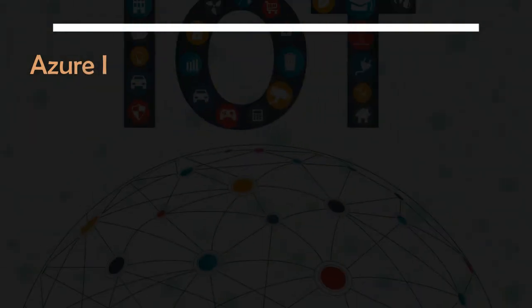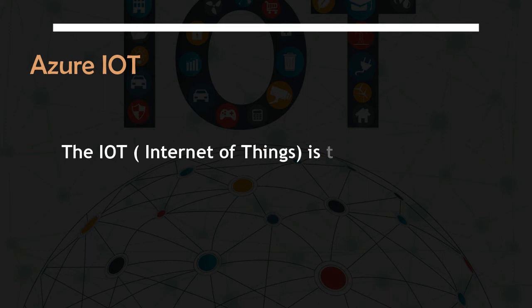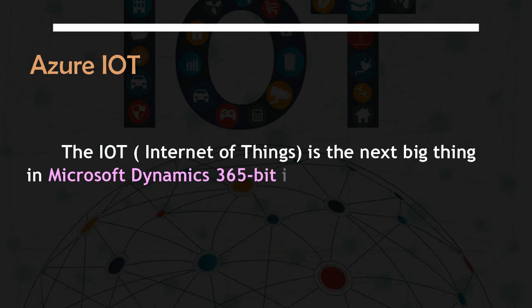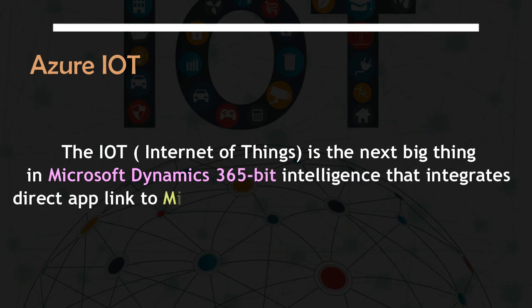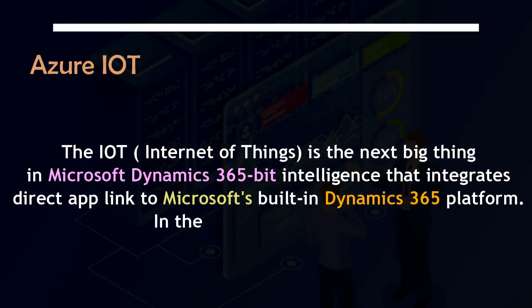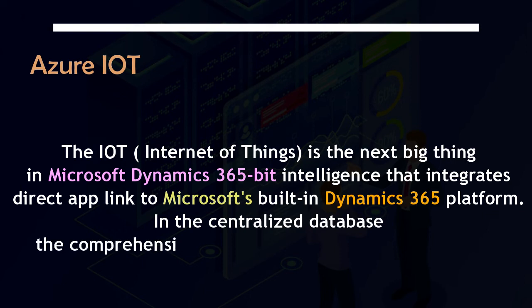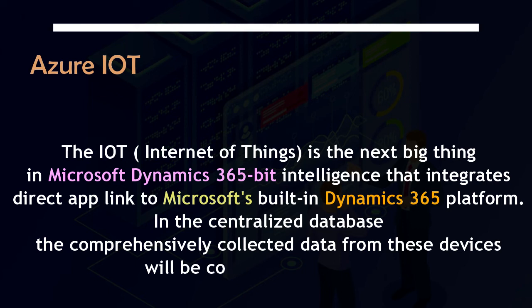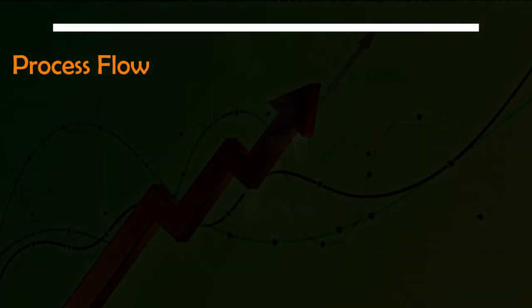Six: Azure Internet of Things. The Internet of Things is the next big thing in Microsoft Dynamics 365, with intelligence that integrates a direct app link to Microsoft's built-in Dynamics 365 platform in the centralized database. The comprehensively collected data from these devices will be compiled in real time.